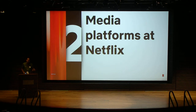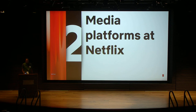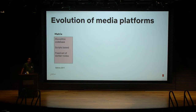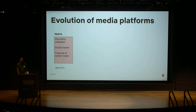Now I'll share about media platforms at Netflix and how our journey to serverless started. Here is our evolution of the media platforms. First, before 2011, the first system we started was called Matrix, which was very early on in media transcoding at Netflix. It was a monolithic codebase for a few team members, scripts-based, with a fixed set of worker nodes, and some of it was even running in data centers.